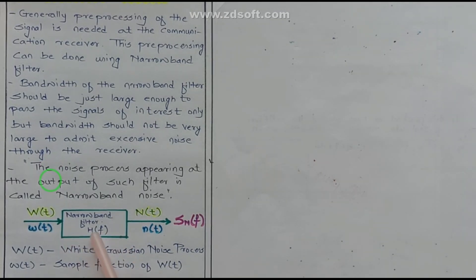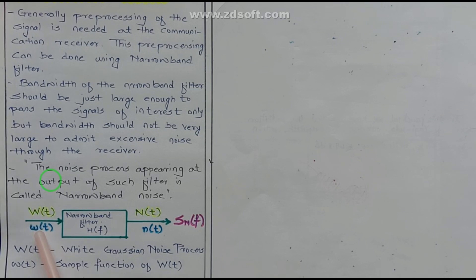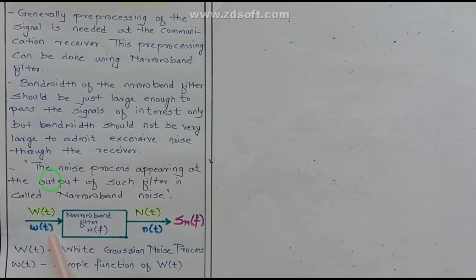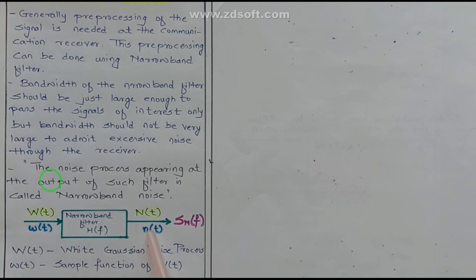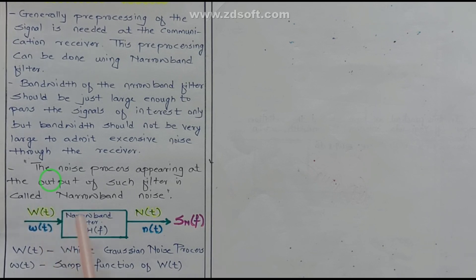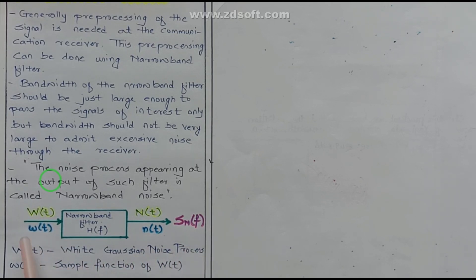Consider n(t) produced at the output of this narrow band filter in response to the sample function of w(t), which is the white Gaussian noise process of zero mean and unit power spectral density applied at the filter input. Now w(t) and n(t) are sample functions of the wide Gaussian noise process W(t) and the noise process N(t) at the output of the filter respectively. So capital W(t) is the white Gaussian noise process, while small w(t) is its sample function.